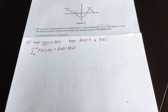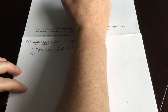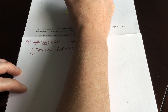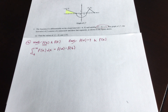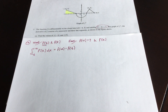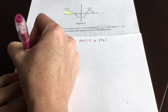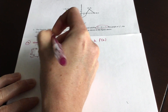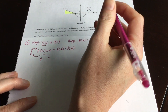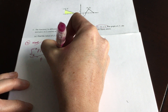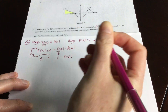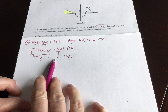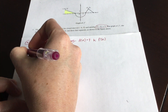From negative six to negative two, we're finding the area of the region bounded between the graph of f prime and the x-axis — it's a triangle, four by two. So one half base times height gives us four. That's positive four because it's above the x-axis. We have f of negative two equals seven, so: seven minus f of negative six equals four, which means f of negative six equals three.